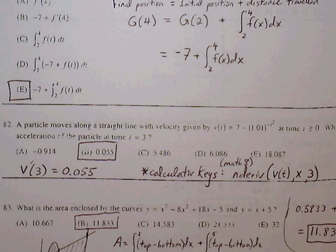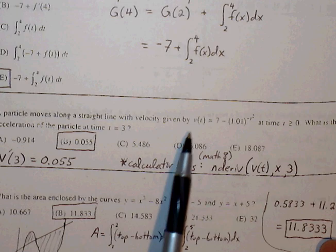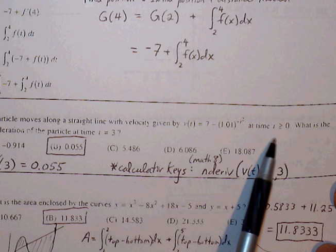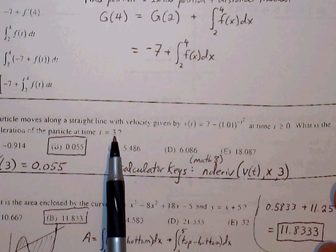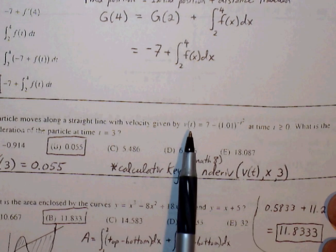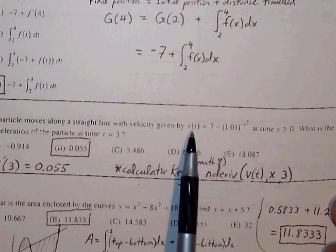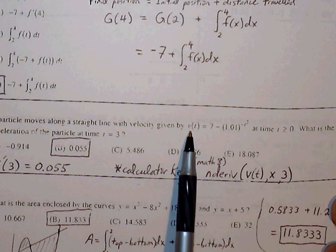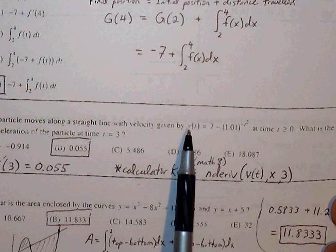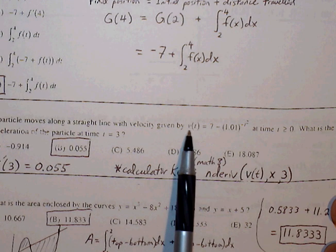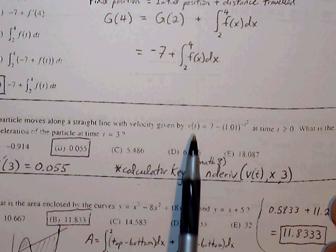82, a particle moves along a straight line with velocity given by v of t. What is the acceleration of the particle at time t equals 3? So acceleration is simply the derivative of velocity. And if I want to evaluate v prime at 3, then I can use our calculator.